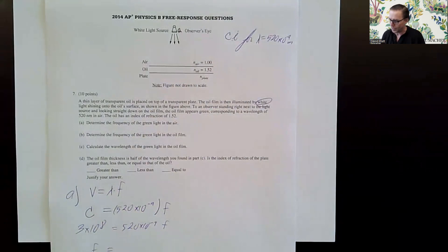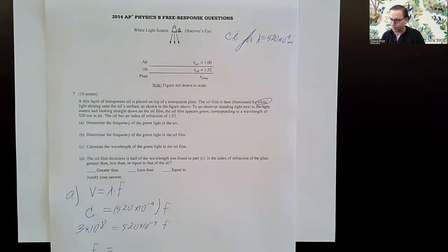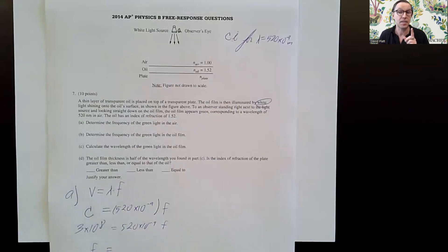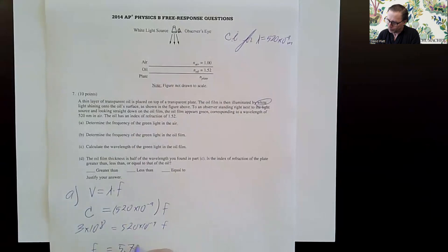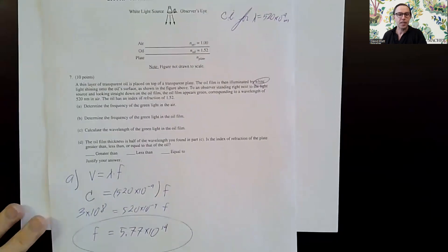Solving for the frequency: it's 3×10⁸ divided by 520×10⁻⁹. That gives me 5.77×10¹⁴. So there is my frequency. The unit is hertz — or I prefer s to the minus one, because what's cooler than a negative exponent?